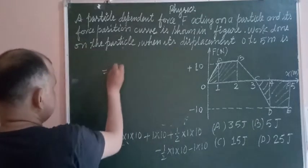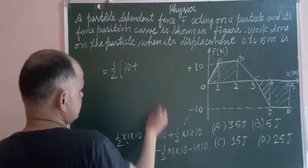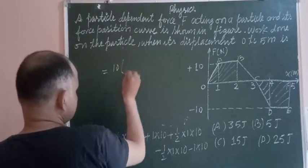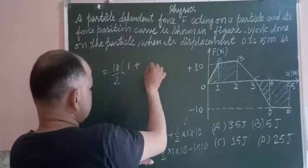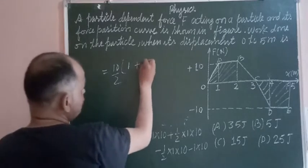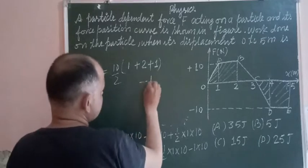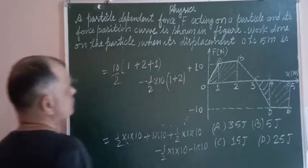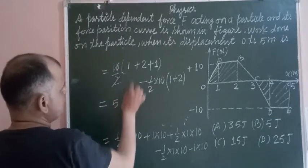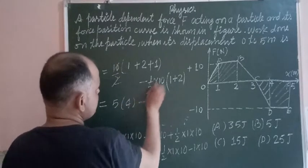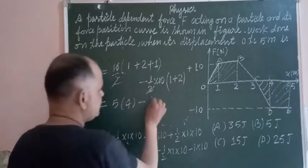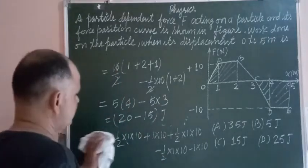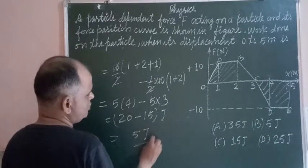Now we can combine these areas. Taking half as common: this is 10, this is 20. Taking 10 common, we get 10 by 2. So this becomes 10 by 2, this is 2 and this is 1, minus half of 10 into 1 and 2. So 10 by 2 gives 5, and 1 plus 2 plus 1 equals 4, minus 10 by 2, which is 5 into 3. Therefore this is 20 minus 15.